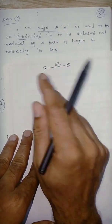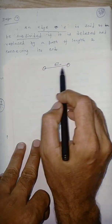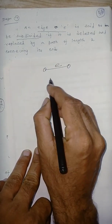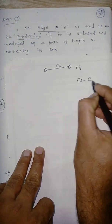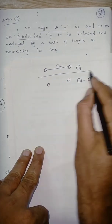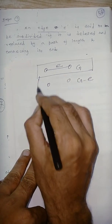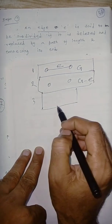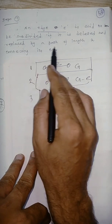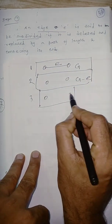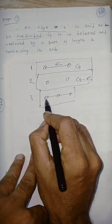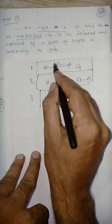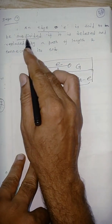An edge is said to be subdivided: it is deleted and replaced. So this is the graph G minus e. Step 1, 2, 3 — replace it by a path of length 2 connecting its ends. The original edge has length 1; after subdivision, the path has length 2. That is what it means for an edge to be subdivided.